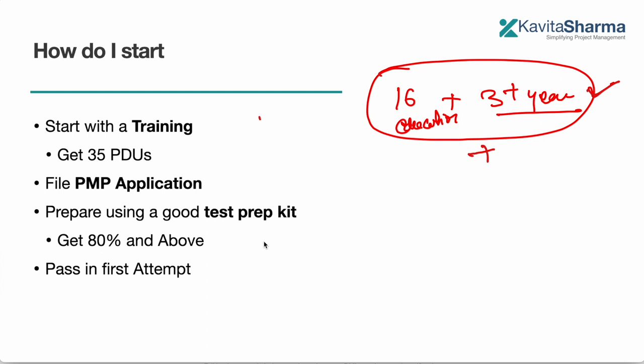If you have this, then you need to start with a training. So there are three components to make you eligible: the education, the experience, and 35 PDUs. So you're going to get 35 PDUs from the ATPs, and that's going to make you eligible. That's how you're going to file the PMP application, because you have to mention where did you do your education from, what is your experience. So you have to file different project management experience.